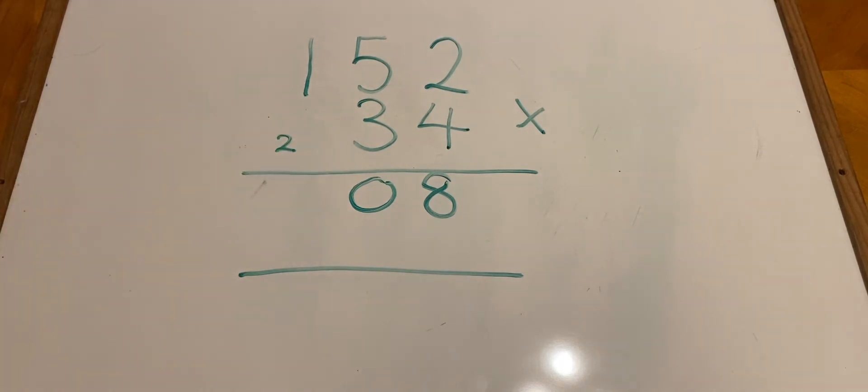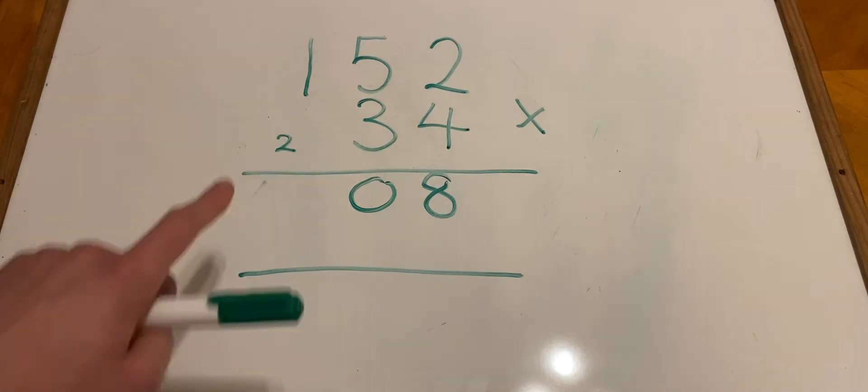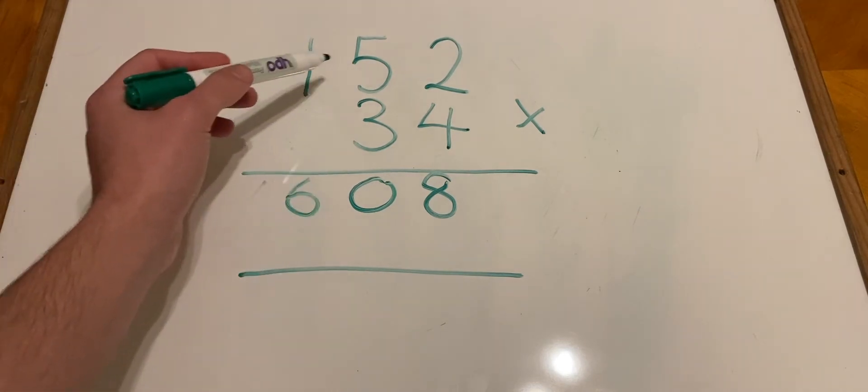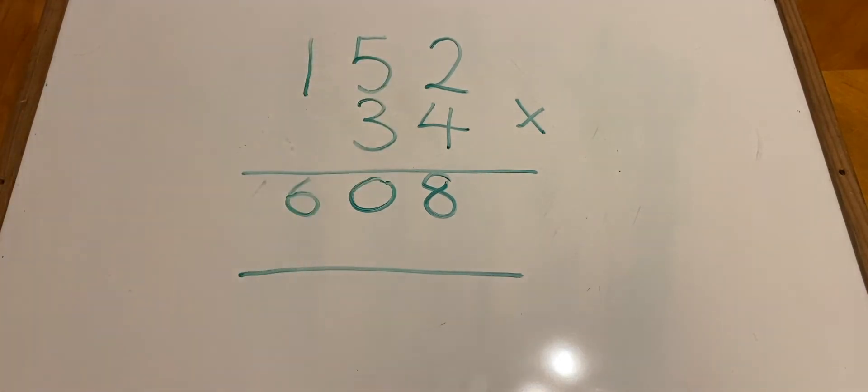Let's not forget about that 2. Then we're going to do 4 times 1. 4 times 1 is 4, but we'll add that 2 to make 6. So we've done 152 times 4, which equals 608.